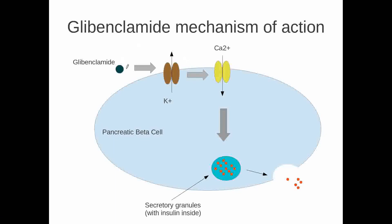Glibenclamide acts by interacting with potassium channels. It stimulates these potassium channels to open and release potassium into the extracellular space. This depolarizes the membrane and allows calcium to influx in, which activates a series of intracellular pathways, which result in secretion of insulin out of the cell.